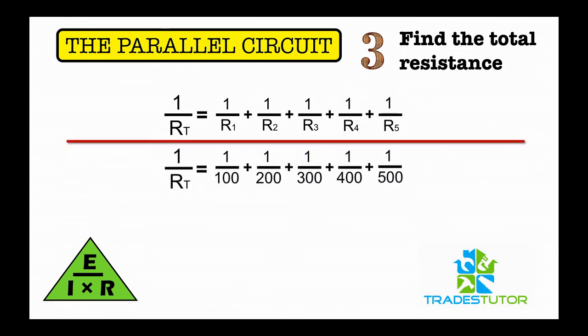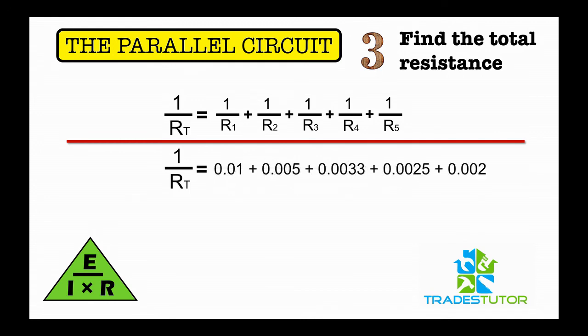All right, and then what we're going to do is add them all up. So we get one over R total is 0.0228. Now we have to switch that around. This is one over R total, but what we need to find is R total, or R total over one.